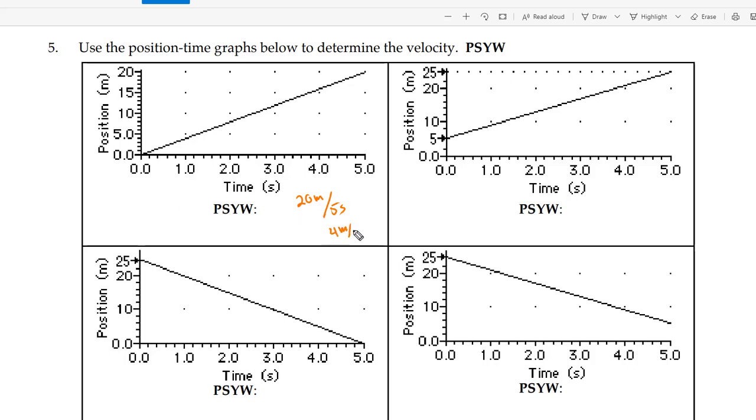So then just divide the two. You should get four meters per second in the positive direction. Here the rise is 25, initial was five, and then your time is from zero to five seconds. So that's also four meters per second, or sorry, four meters per second positive.